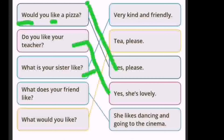Next: 'What is your sister like?' You can also ask 'What's your daughter like?' or 'What's your father like?' In spoken English, 'like' here is used to talk about someone's character or personality. So you can answer 'Very kind and friendly' or 'She's lovely.'